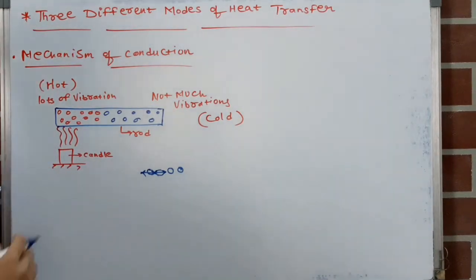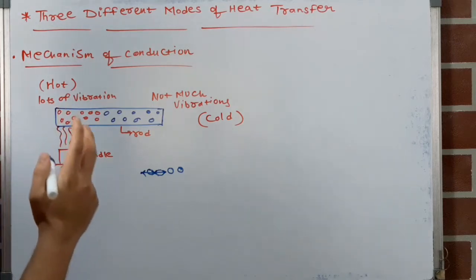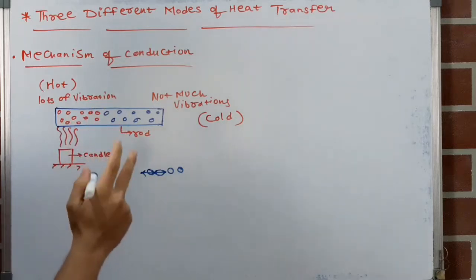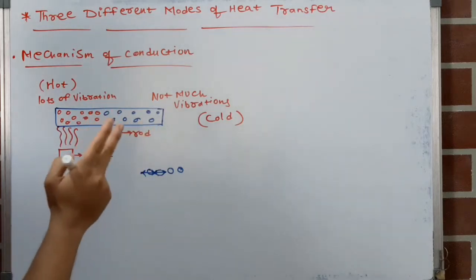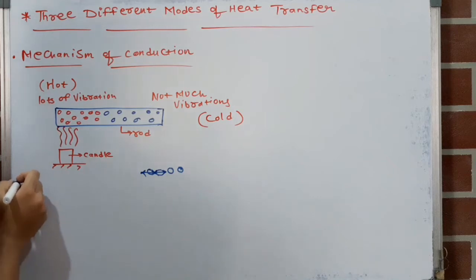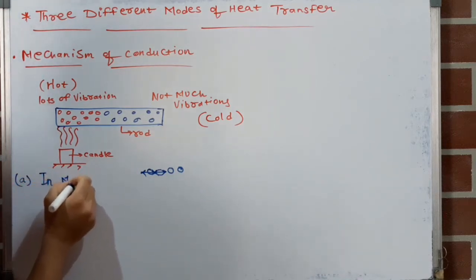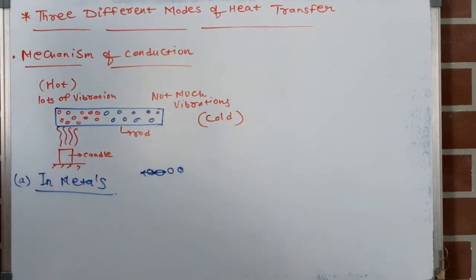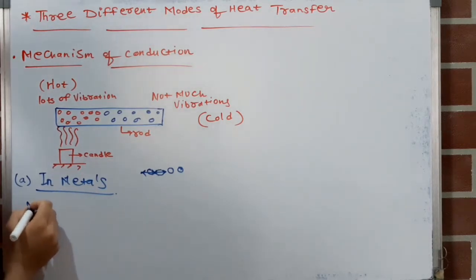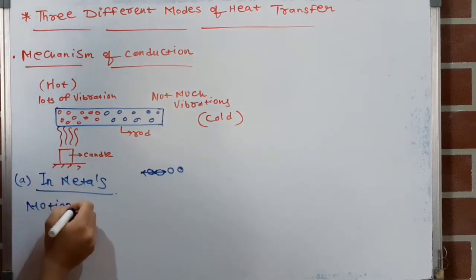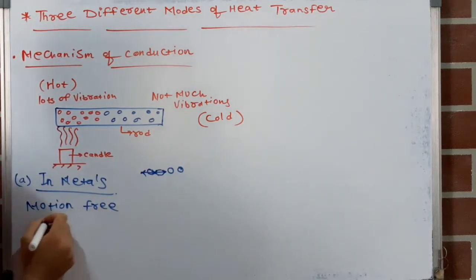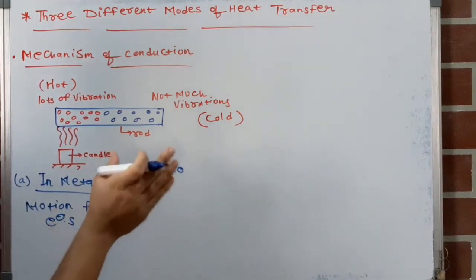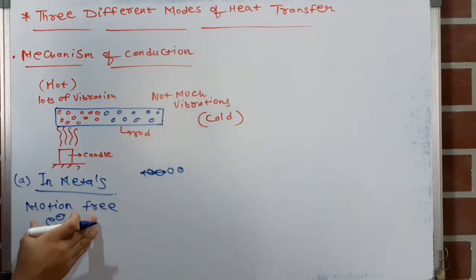Conduction of heat or energy in solids occurs in two different ways. First, in metals, conduction of heat or energy occurs due to the motion of free electrons.